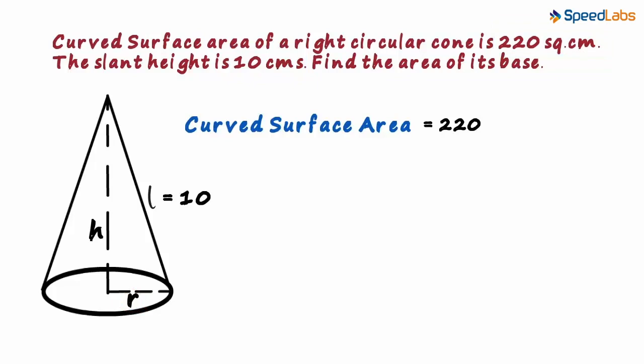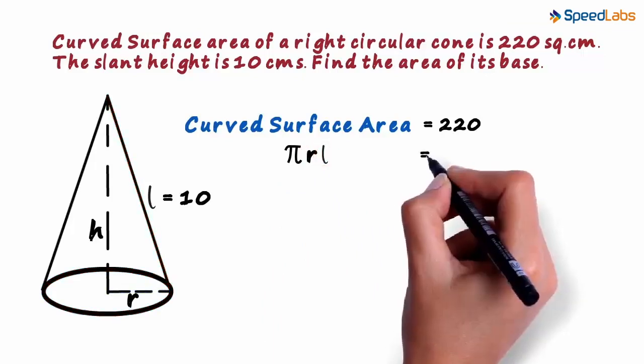Do we know the formula of the curved surface area of a cone? Yes, the curved surface area is given as Pi R L, where R is the radius of the circular base and L is the slant height. So that will equal 220.